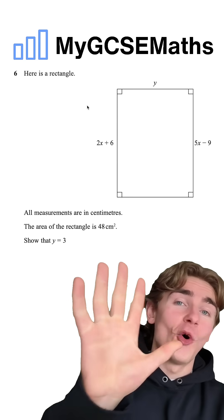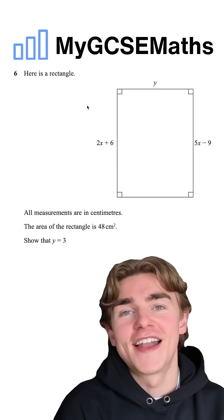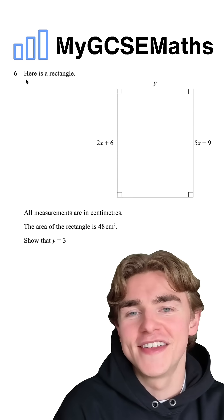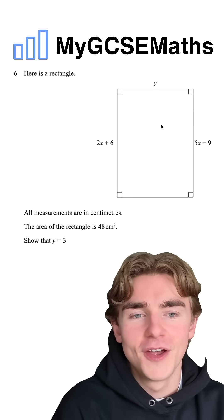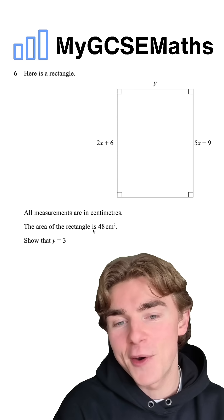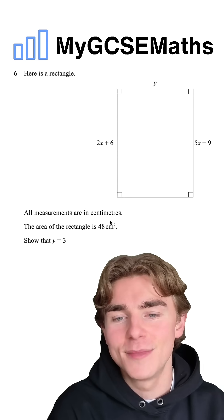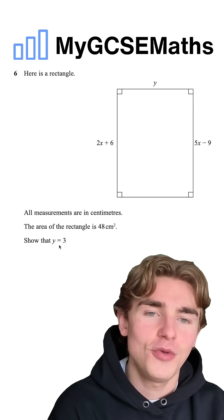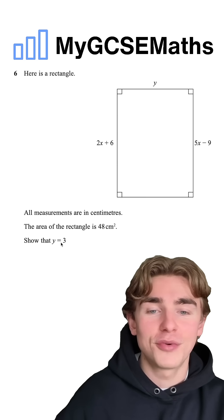If you're shooting for a grade five or higher, you want to be getting marks like this. The question says: here is a rectangle. We're given the rectangle here. All measurements are in centimeters. The area of the rectangle is 48 cm². We're asked to show that y equals 3.